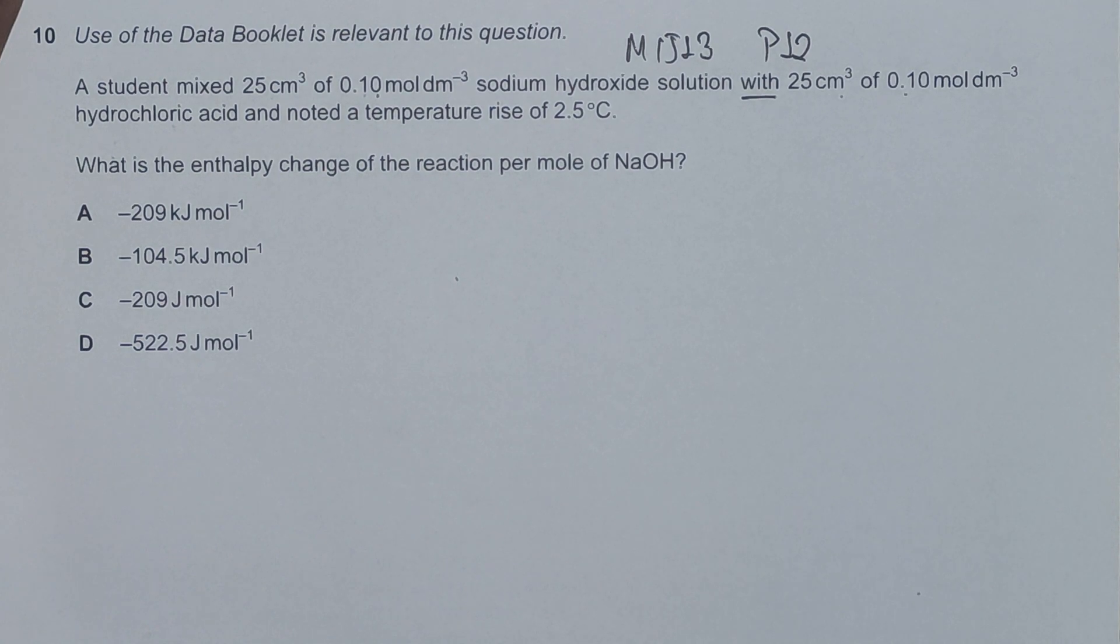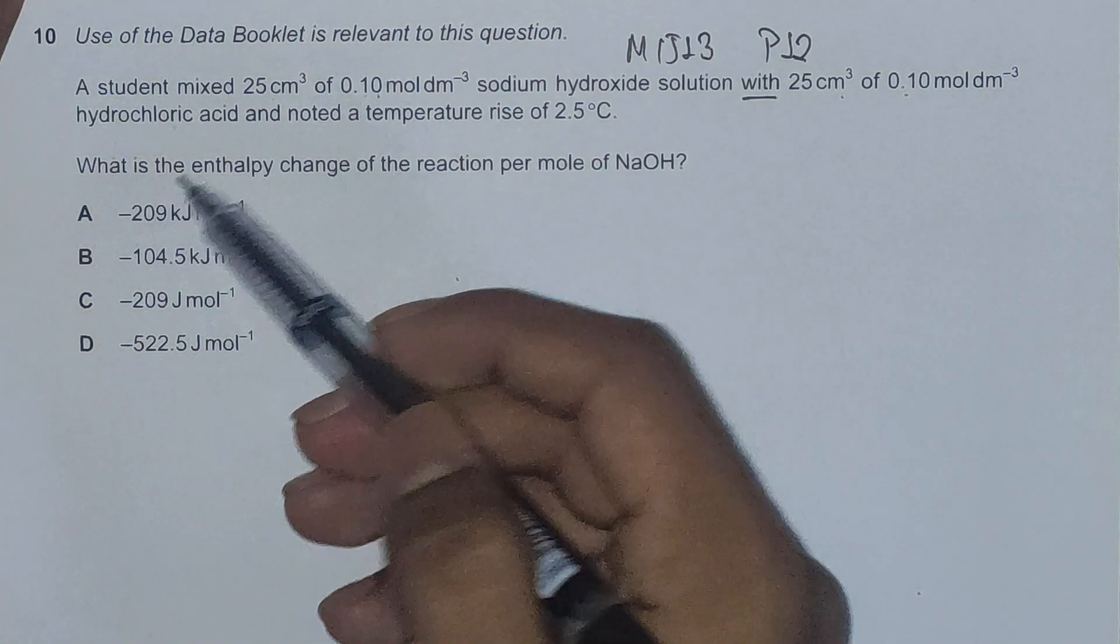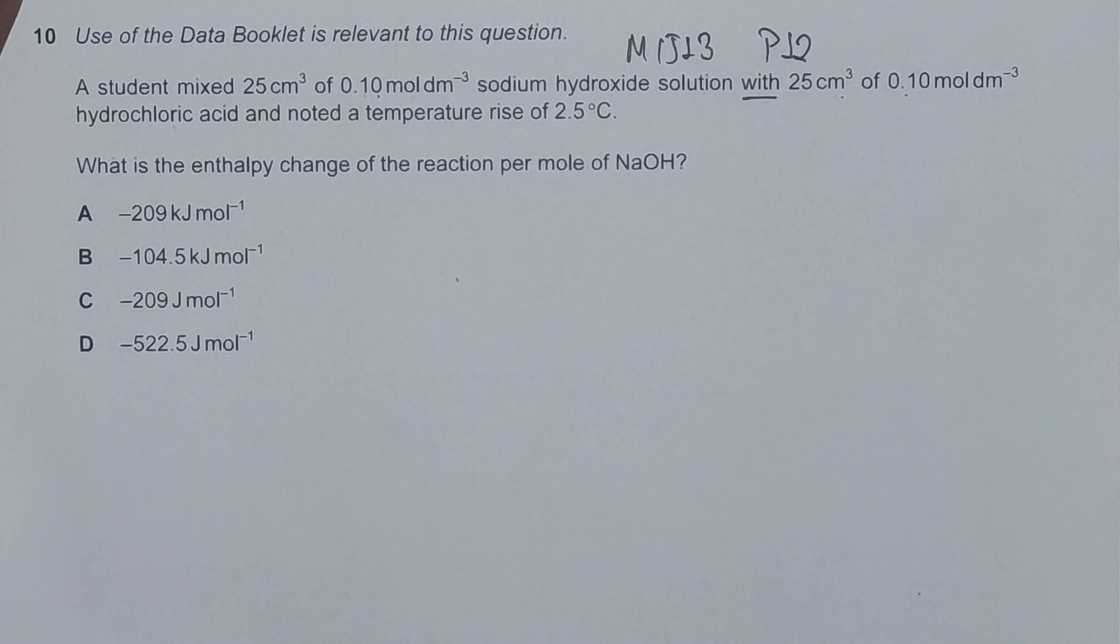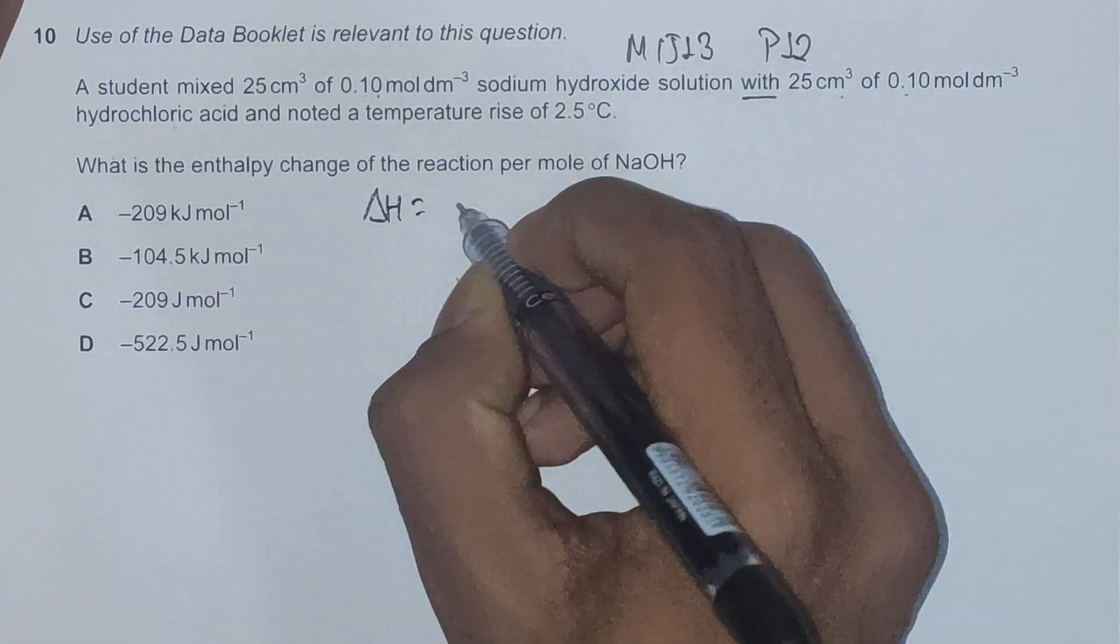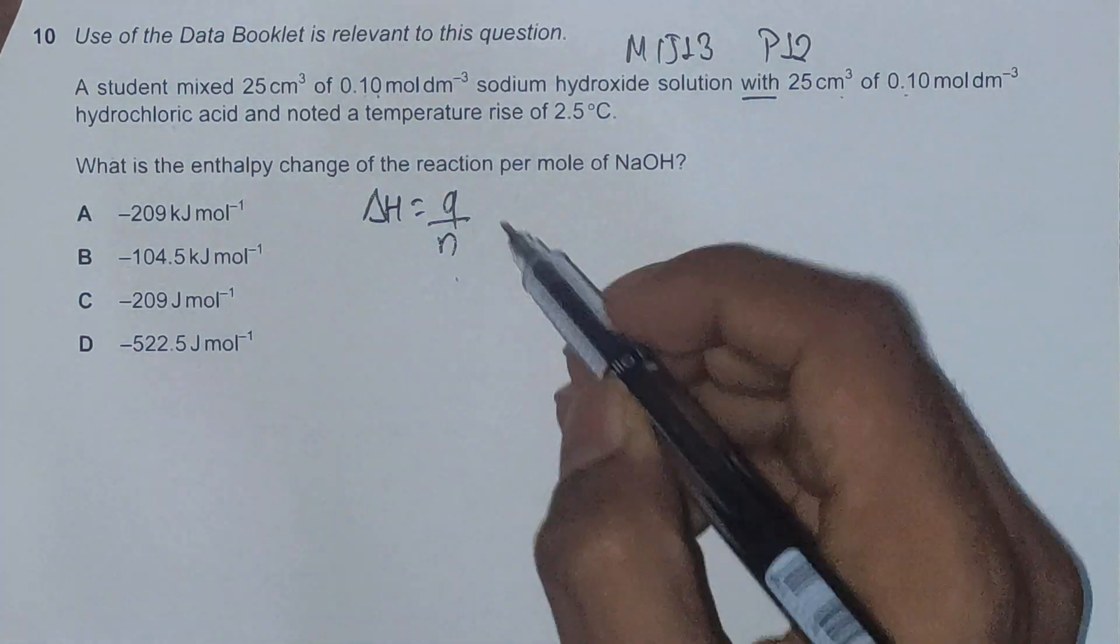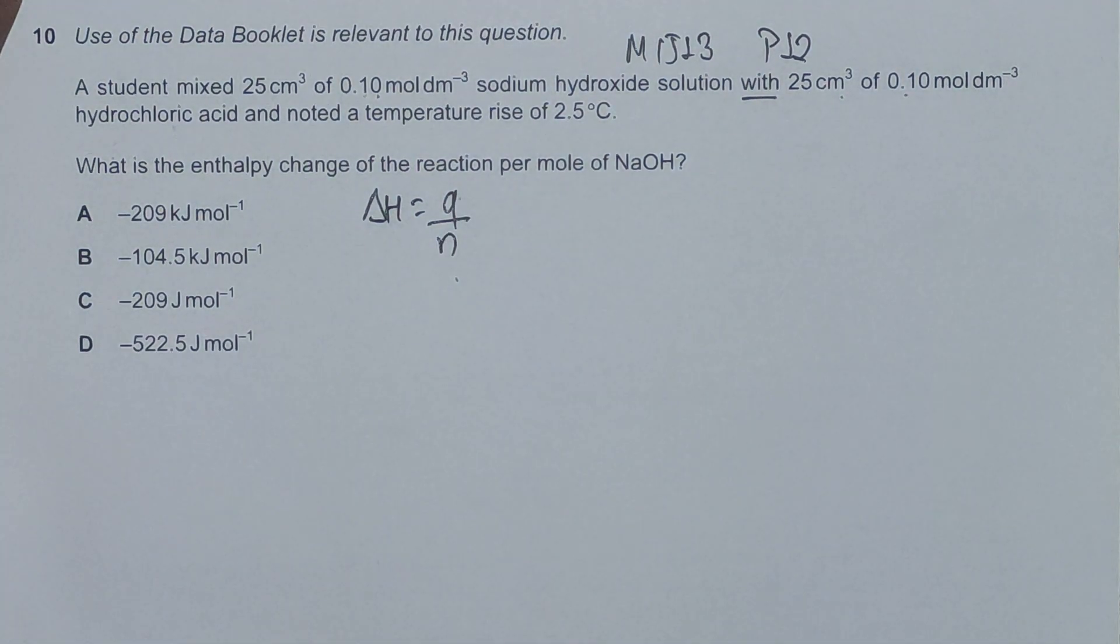This means the reaction is exothermic, as expected. What is the enthalpy change of reaction per mole of NaOH? So the formula for delta H is Q divided by moles. Now we have to find Q, which is the energy, and n is the moles of NaOH.